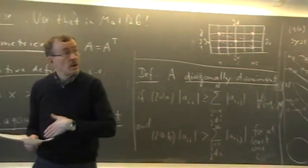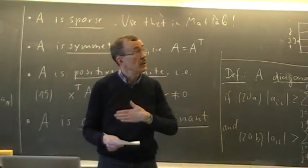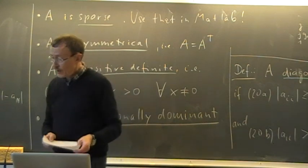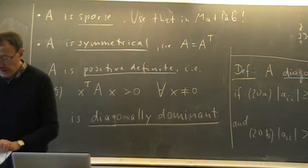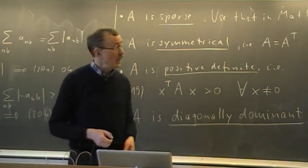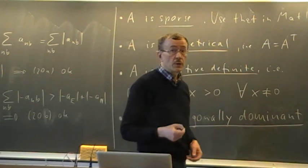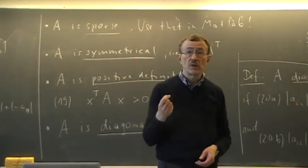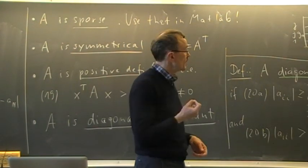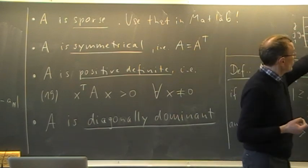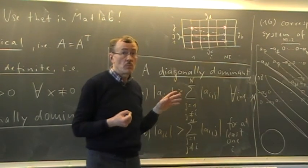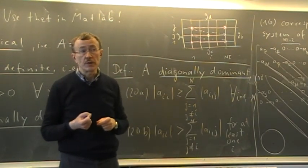We'll take a break here and continue after the break by completing this and looking at the situation when we have not only Dirichlet boundary conditions everywhere but also Neumann boundary conditions at some boundaries.